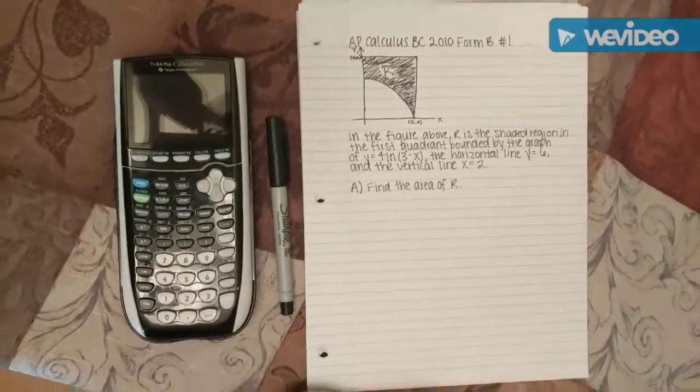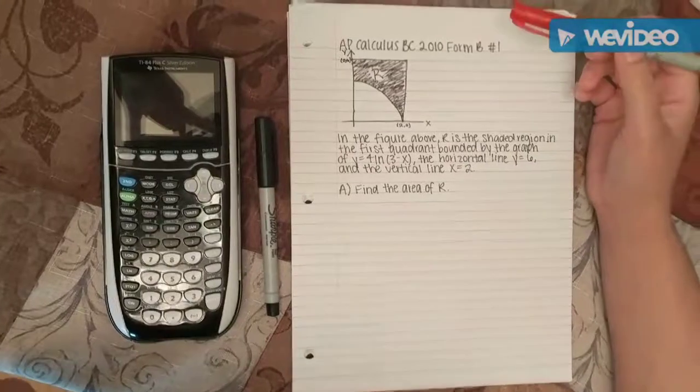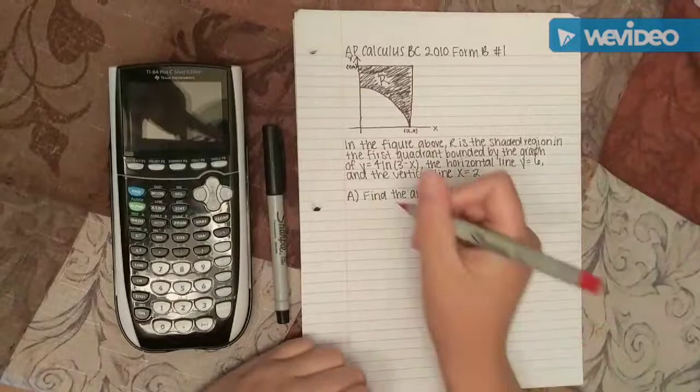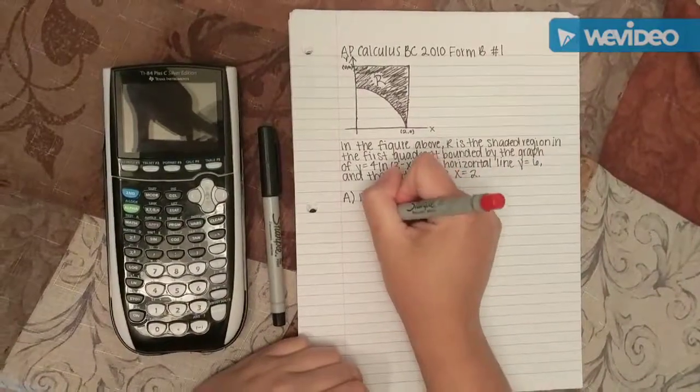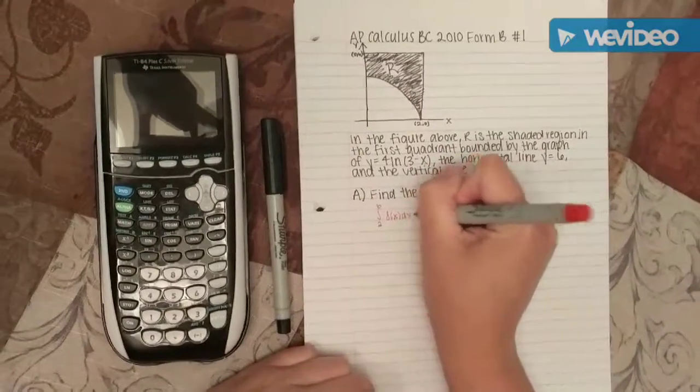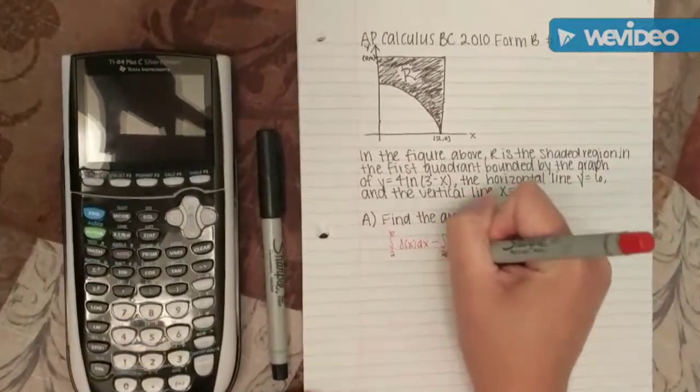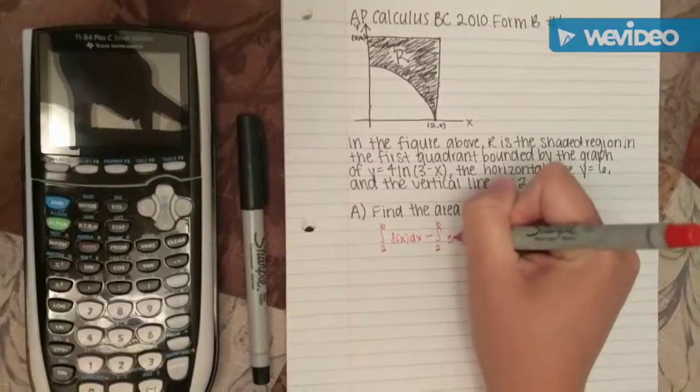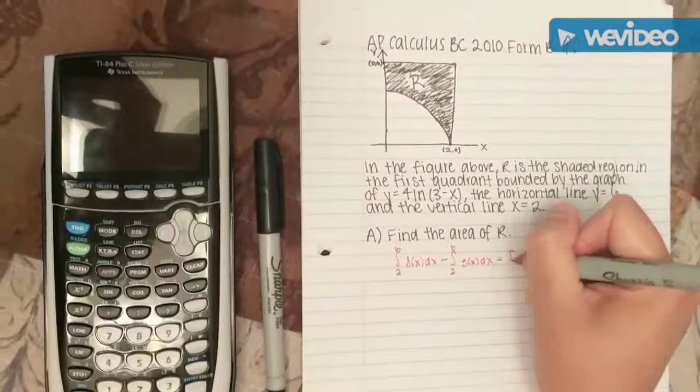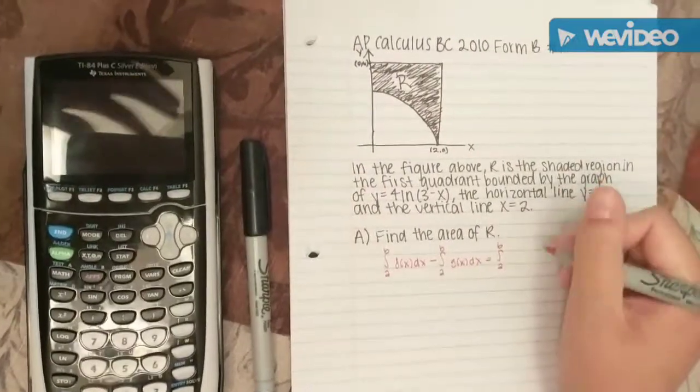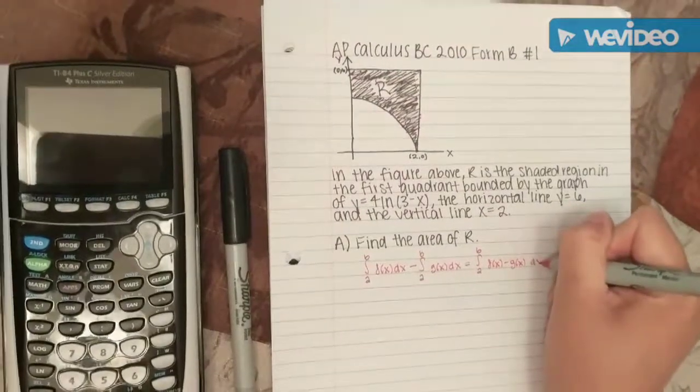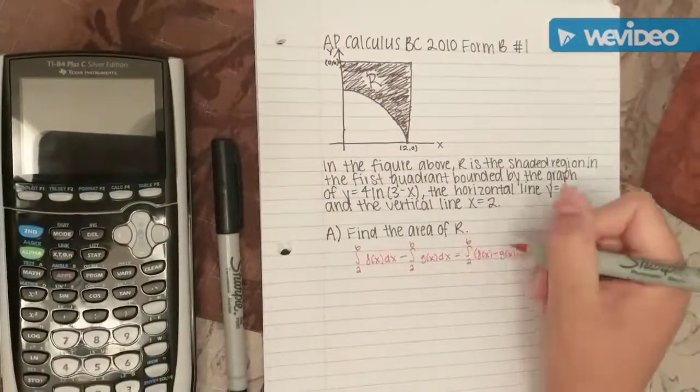For part A, we have to find the area of R. To do this, we would use the area between two curves formula, which is the integral from a to b of f(x) dx minus the integral from a to b of g(x) dx. To make it easier, you can condense it into a smaller formula, which is the integral from a to b of f(x) minus g(x) dx because they have the same bounds.